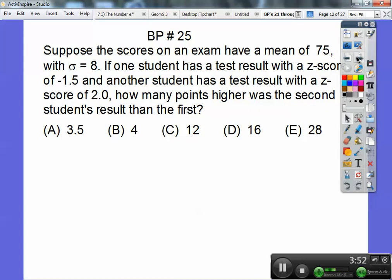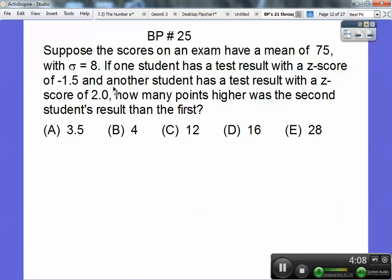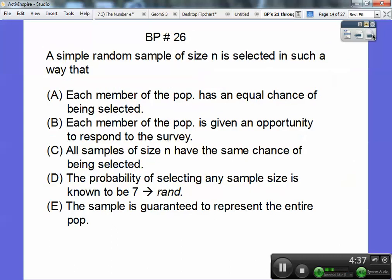Suppose the scores on an exam have a mean of 75 with a standard deviation of 8. If one student has a test score with a z-score of negative 1.5, so negative 1.5 times that is negative 12. If I take 12 off of that, that's 63. So they've got a 63. Another student has a z-score of 2.0. So I'm going to add 2 times 8, which is 16 to that, which is 91. So how many points higher was the second student than the first? It's just 91 minus 63, which is 28. Choice E.